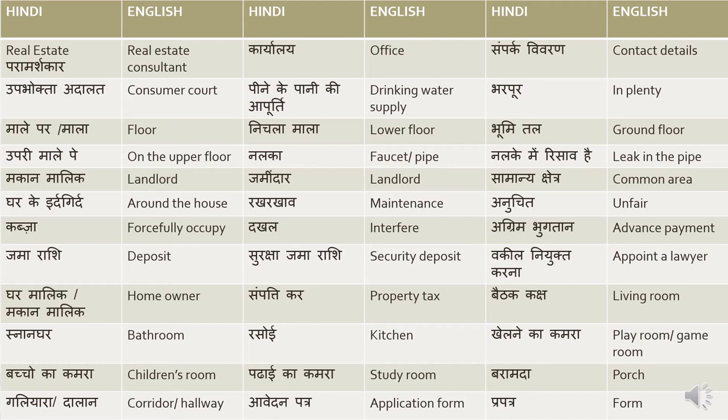Upabhokta adalat means consumer court. Pene ke paani ki aapurti means drinking water supply. Bharpur means in plenty. Usually they'll say that the drinking water supply is plenty here — pene ke paani ki aapurti yahaan bharpur hai. Malay par or mala means floor. Nichla mala means lower floor. Bhoomital means ground floor. Upri malay pe means on the upper floor.